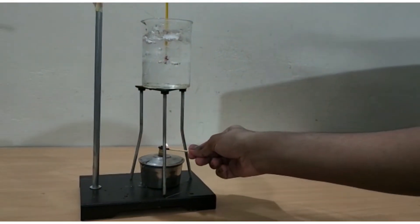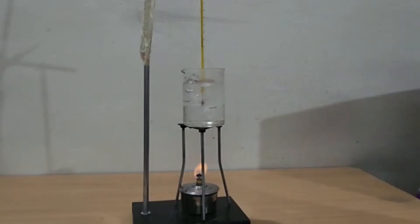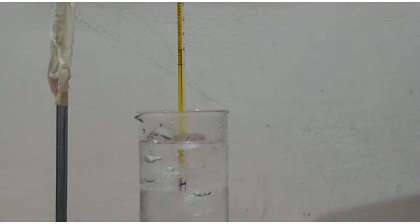Now we heat the ice gently by using a small flame of the burner. On heating, ice starts melting to form water.